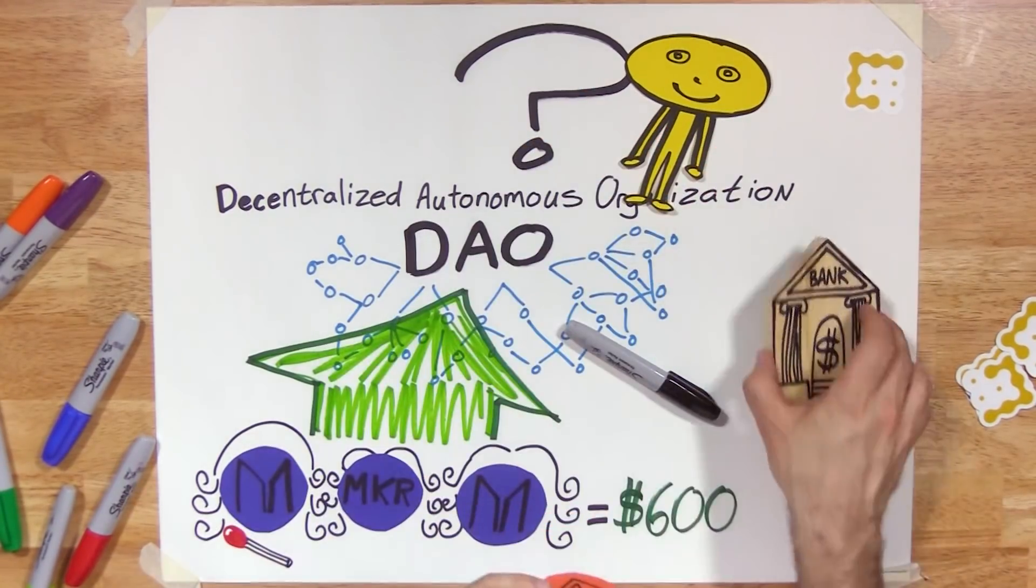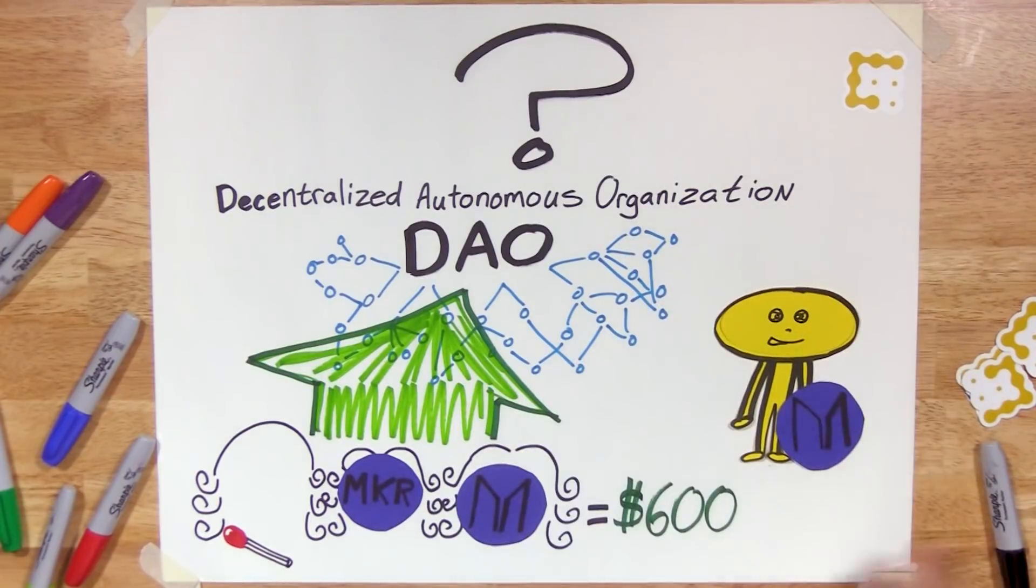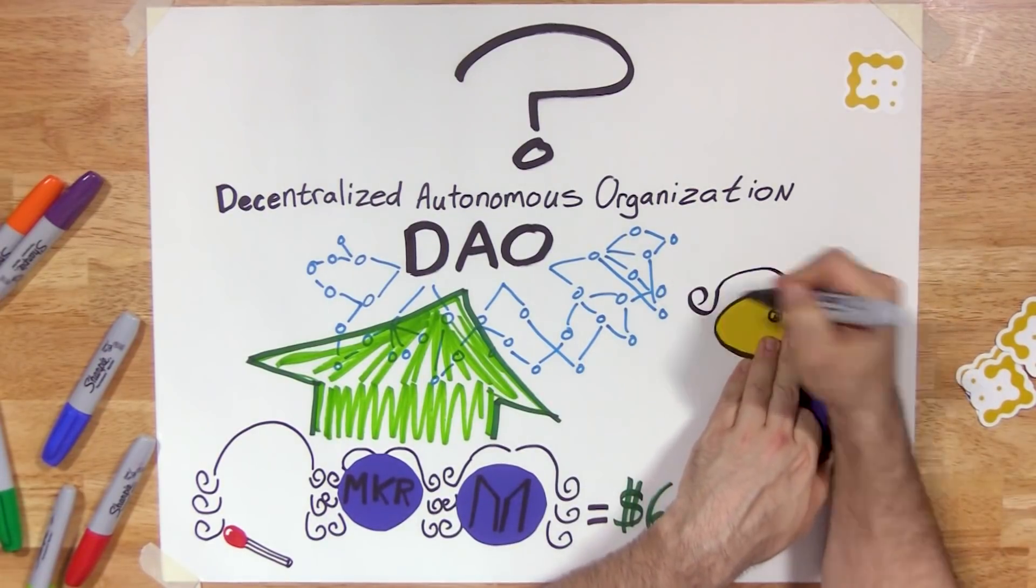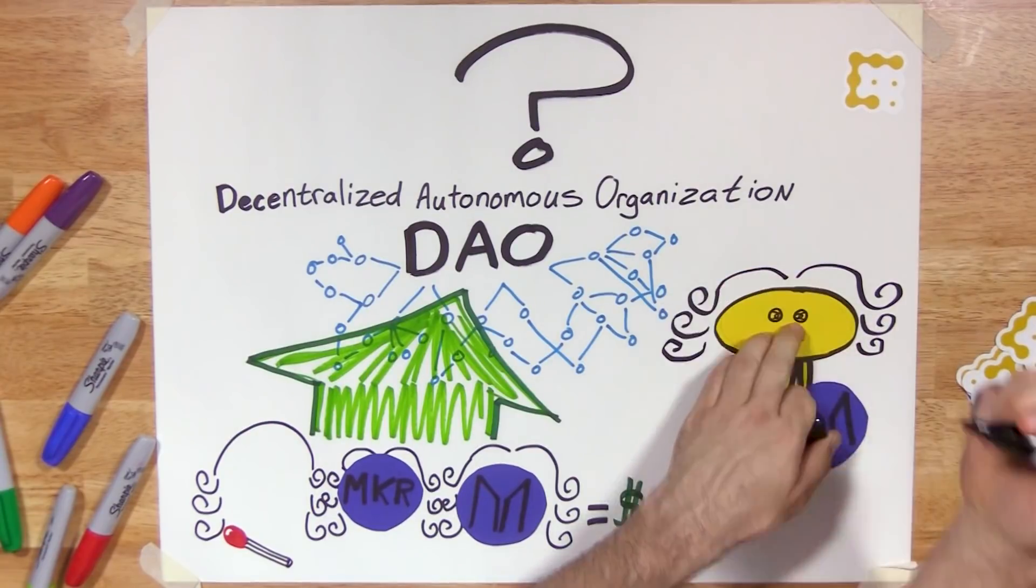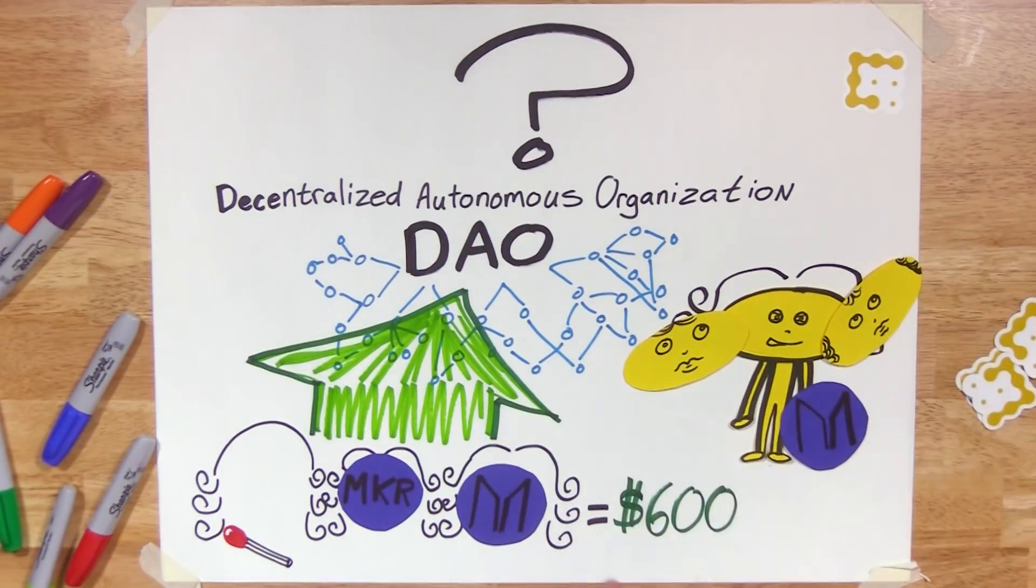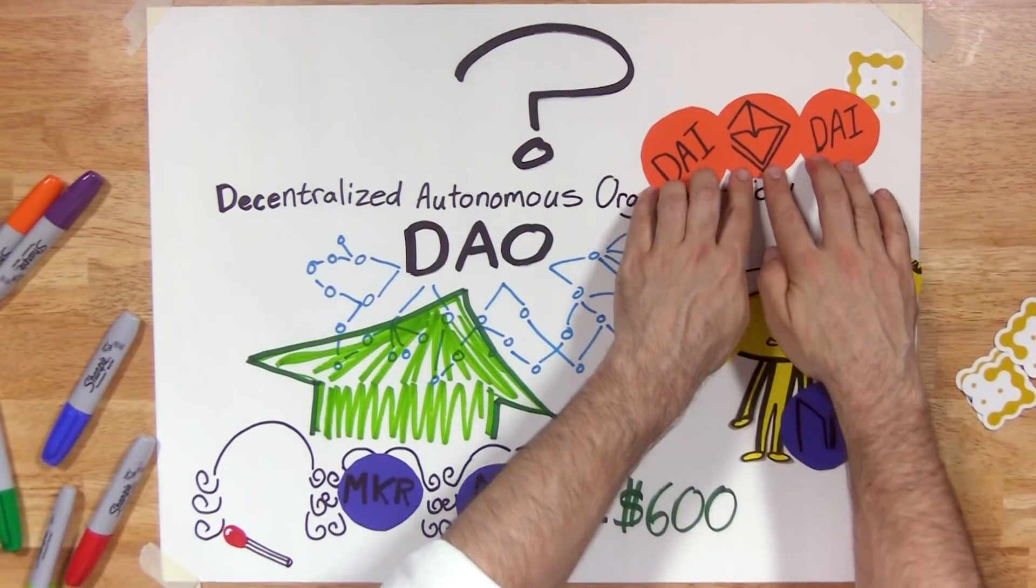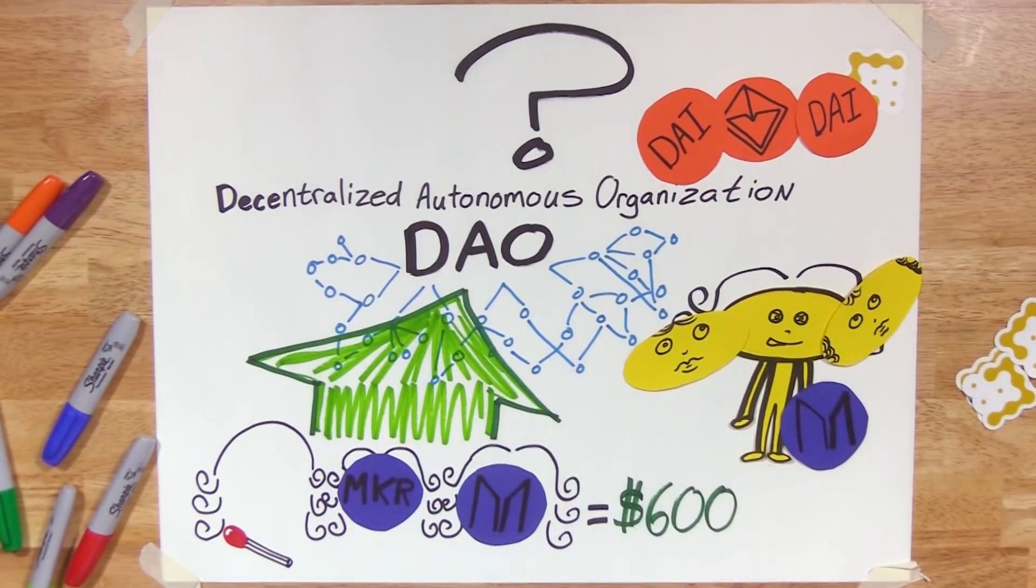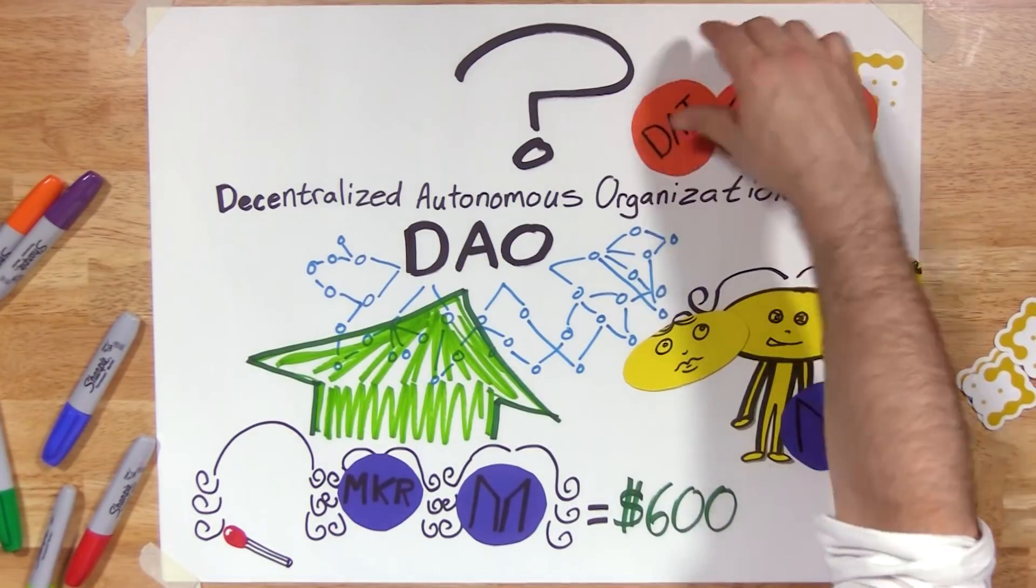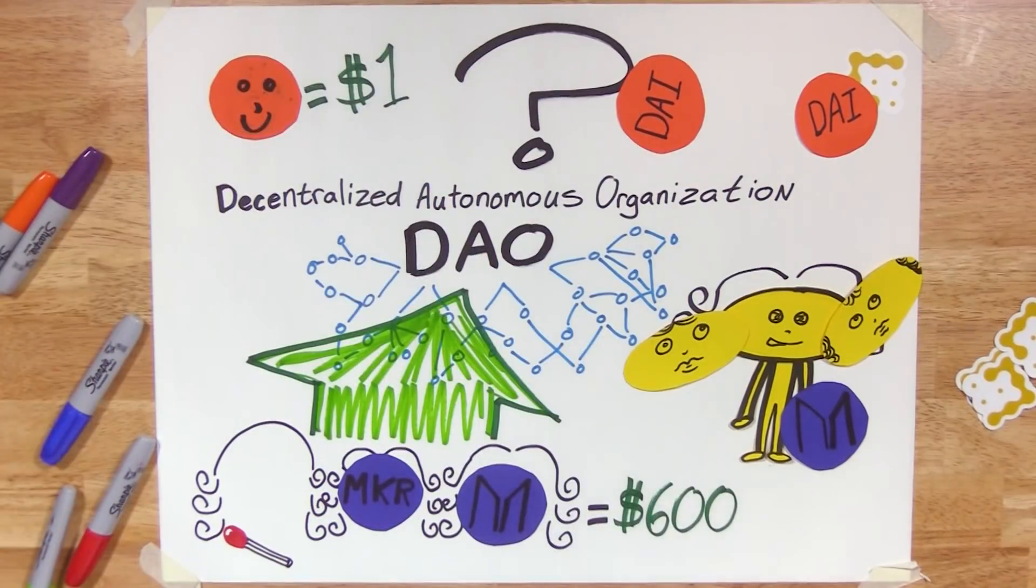Holding MKR also gives participants the chance to be a decision maker in an interesting, new kind of financial organization. Collectively, these people pay attention to the price of DAI, and decide whether or not the interest rate needs to go up and down. So far, they've been mainly choosing to drive it up. As pioneers of a new financial instrument, there's not much prior data for MKR holders to draw on to make an optimal decision. Nevertheless, as of this recording, DAI's price appears to have returned to a steady dollar valuation across major cryptocurrency exchanges and over-the-counter trading desks.